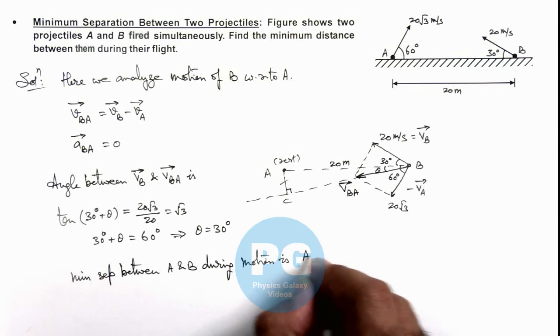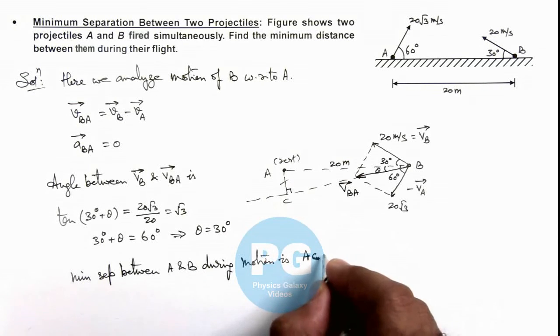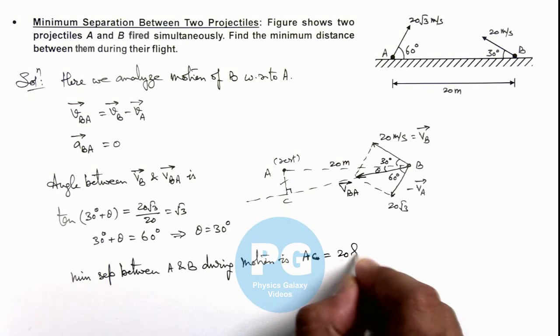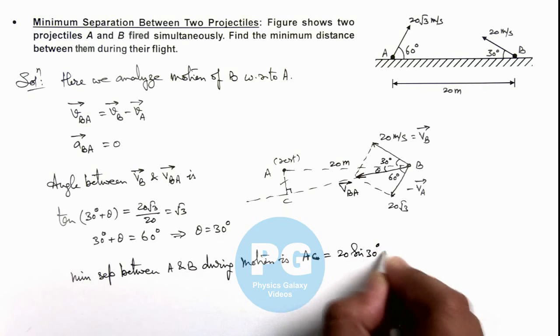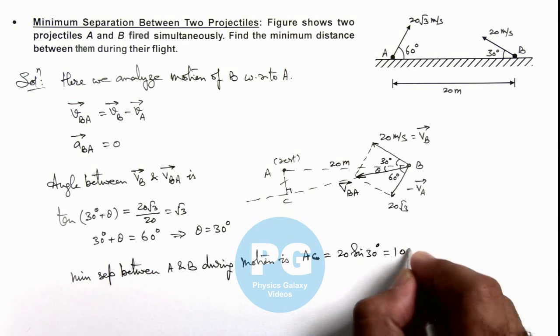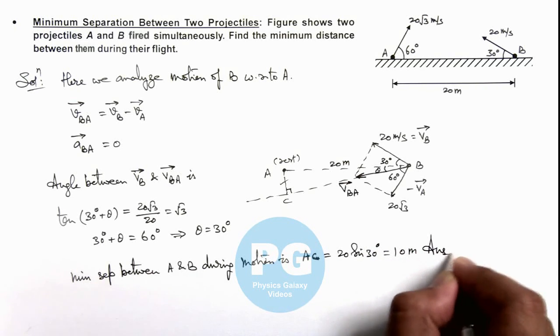This can be written as AC, and the value of AC we can write as 20 sine 30 degrees, that is 20 by 2, which is 10 meters. This is the final result of our problem.